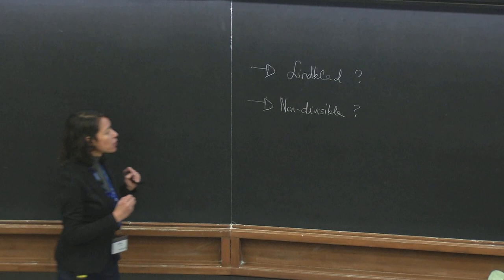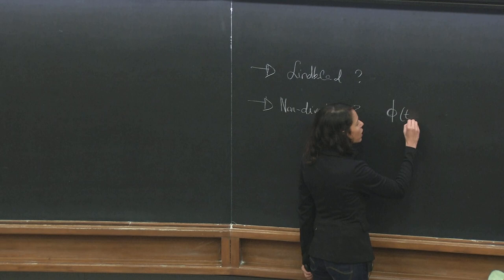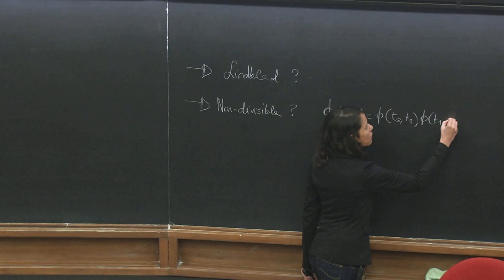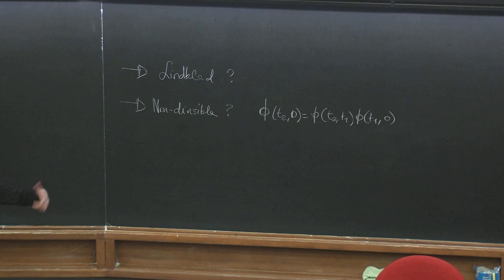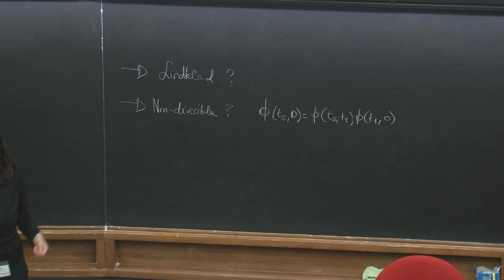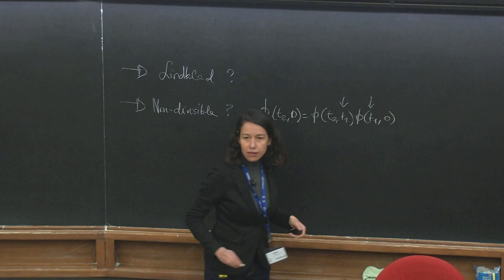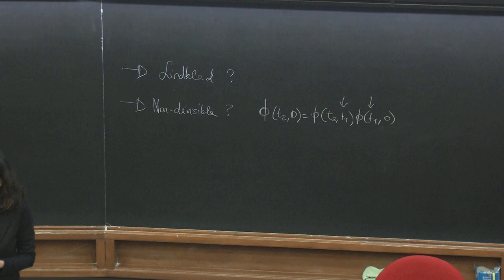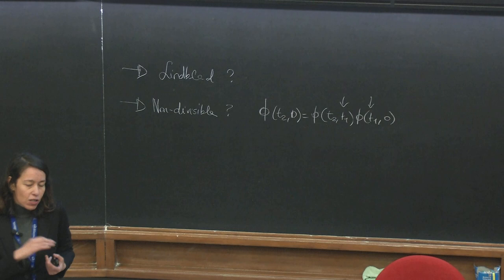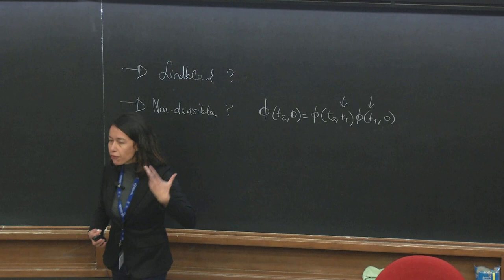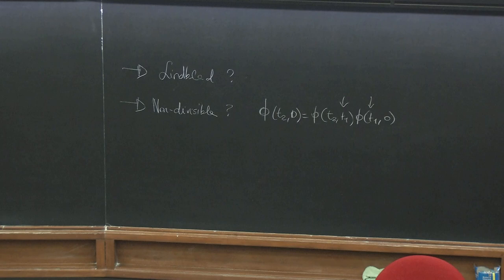This is what I was explaining to you earlier. When a map is divisible, you can always decompose it into little pieces — and more and more little pieces if you want — and each of these pieces is a dynamical map. This is important because if you have a quantum information protocol with this property, you can use these little pieces in between operations on your qubit. It is important that these are well-defined dynamical maps, because otherwise they would do crazy things to your reduced density matrix.